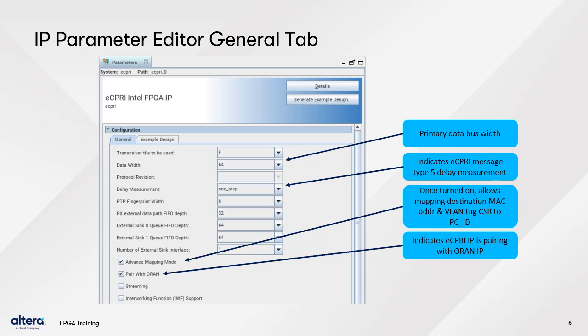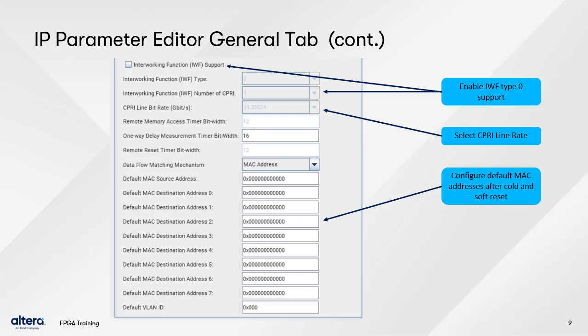Enabling Streaming lets you control the maximum Ethernet frame size. Off sets the max frame size to 1500 bytes; On sets the max frame size to 9000 bytes. Continuing down the tab, you can see the option to enable IWF Type 0 support. Since currently only Type 0 and a single CPRI MAC are supported, the following two fields are fixed. You can also indicate the CPRI planned line rate for your CPRI interface. Finally, at the bottom, here is where you can set up to eight default MAC addresses.